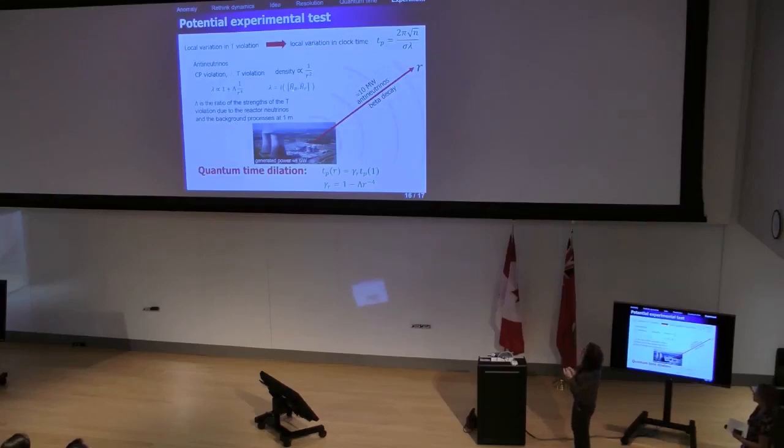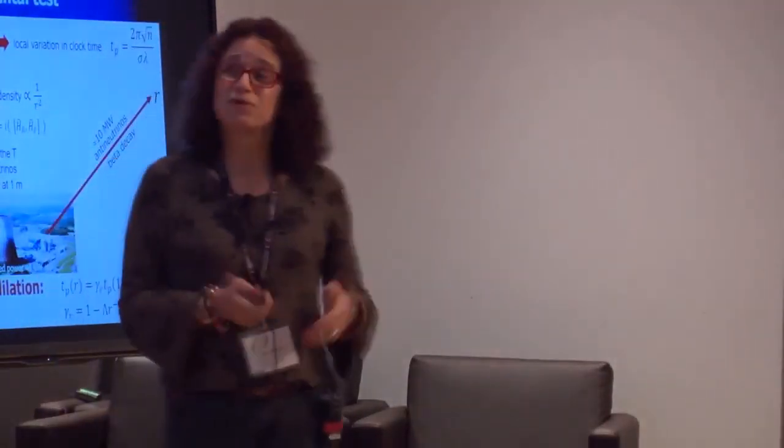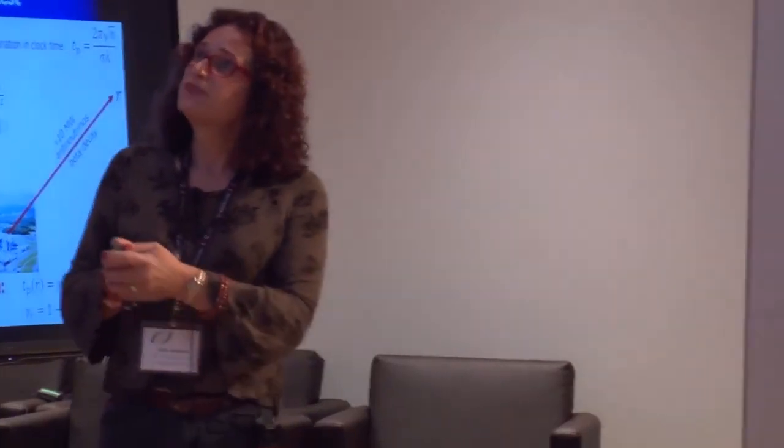Now, if that commutator varies locally, then Lambda will change and the peak will appear at a different place. So this is like a quantum time dilation. Really controversial. So the idea is that the peak, the point where the peak in the Gaussian would be, would depend upon how much local T-violation that's going on.